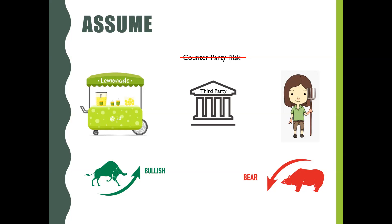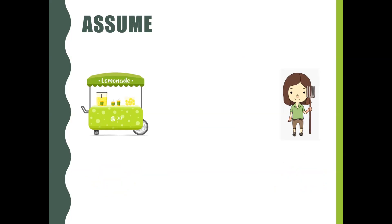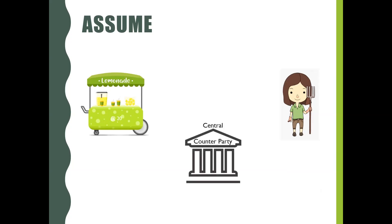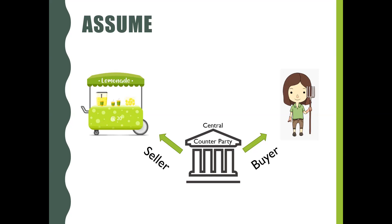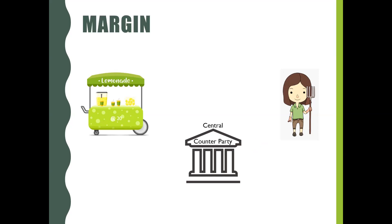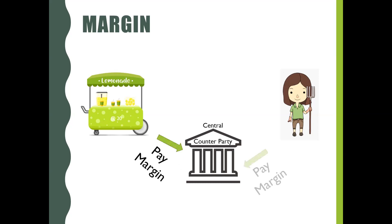How would this third party mitigate the risk? This third party, called a Central Counterparty or CCP, plays the role of seller to the lemonade vendor and buyer to the lemon farmer. To mitigate risk, the CCP collects margin — in other words, a collateral — from both parties, which refrains the traders from defaulting their contract. This way, the counterparty risk is mitigated by the CCP in the Futures contract.